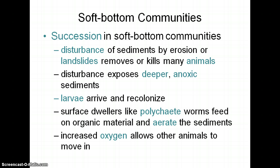The top layer of soil is also gone, and what is exposed are these deeper layers of dirt. The deeper layers of dirt are what we call anoxic, meaning without oxygen. Because they're anoxic, you don't have animals that can survive there. So you need some sort of creature to come and settle there, allow water to circulate, so that oxygen can get there and animals can recolonize that area.